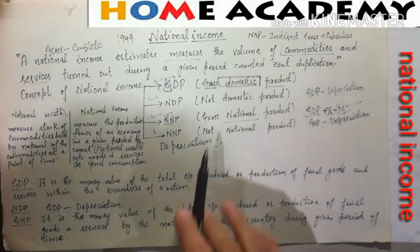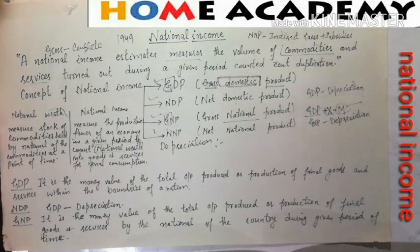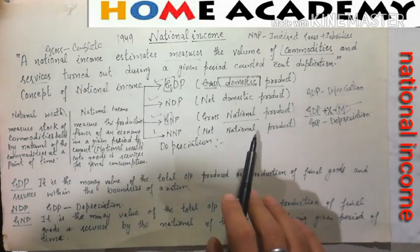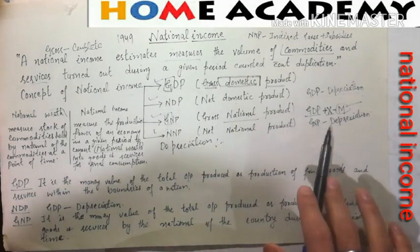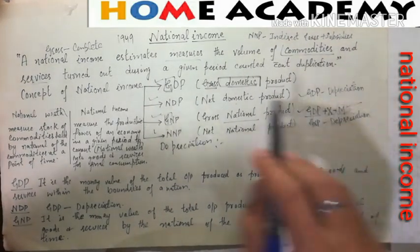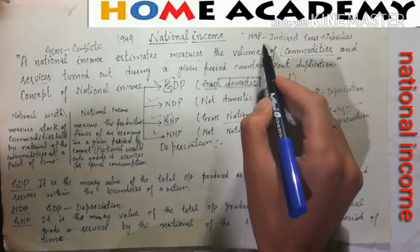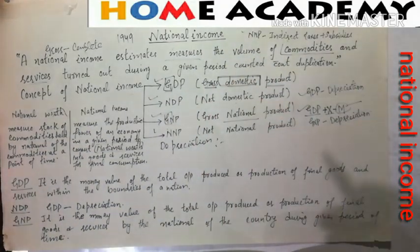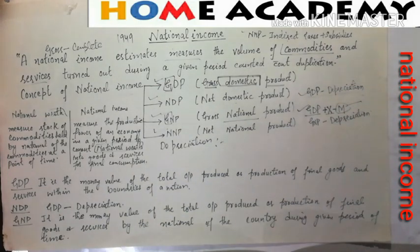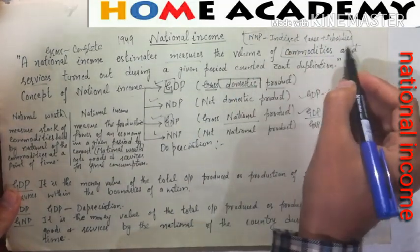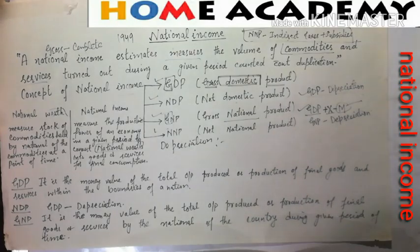NNP stands for Net National Product. From NNP we calculate national income. Important formulas to remember: NDP = GDP − Depreciation; NNP = GNP − Depreciation; National Income = NNP − Indirect Taxes + Subsidies. Since you are studying for multiple choice questions and not a theory class, just fix these formulas in your mind.